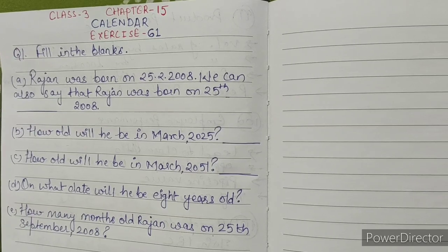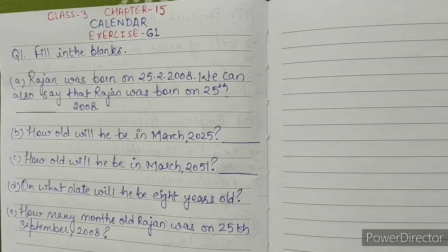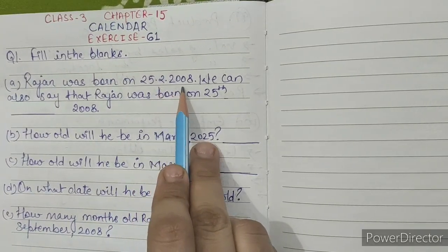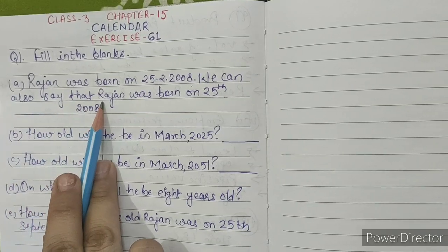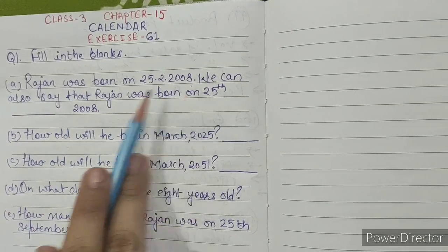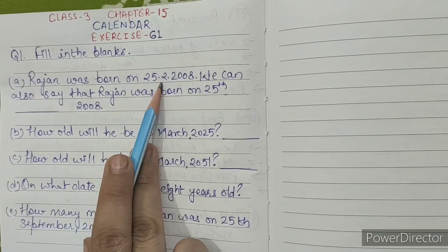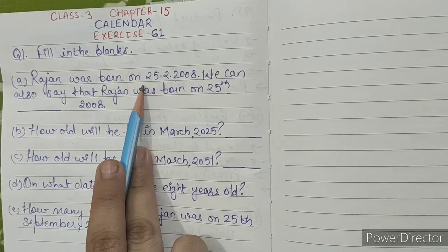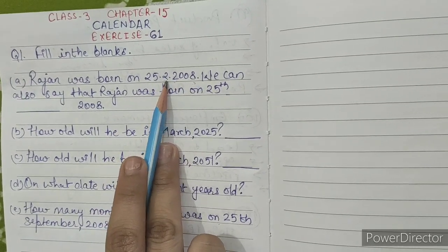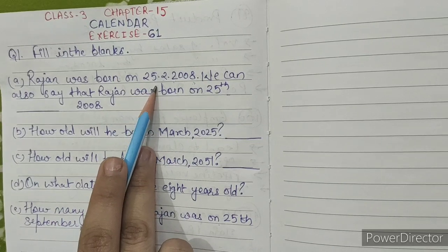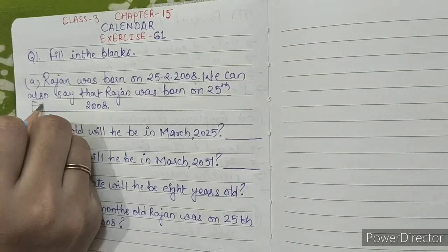Question number 1. Fill in the blanks. A. Rajan was born on 25th February 2008. We can also say that Rajan was born on 25-2-2008. February is the second month, so we write 25-2-2008.